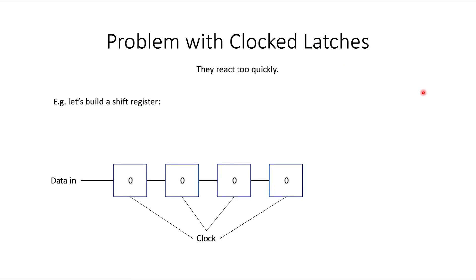What's a shift register? Consider the following scenario. You have four modules that store a bit — so each stores a zero or a one. You might think of this as something like a latch, but for now just think of it as some abstract system which can store one piece of information. There's an input wire going into the first one, and that has an output wire which feeds into the second one as an input wire, and so on until we get to the end.